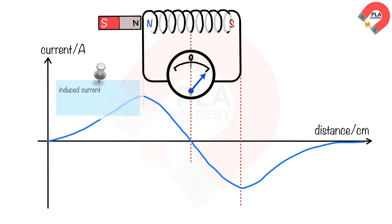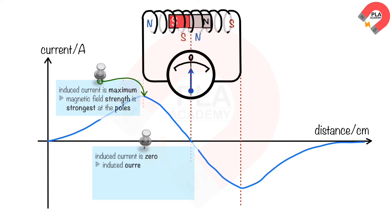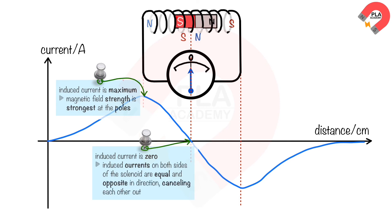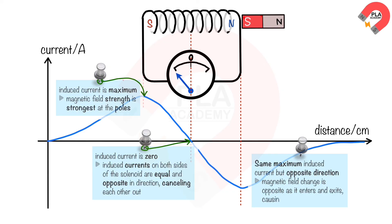The induced current is maximum when the magnet is entering the solenoid, because the magnetic field strength of the magnet is strongest at the poles. The induced current is zero when the magnet is at the middle of the solenoid, because the currents induced on both sides are equal and opposite in direction, cancelling each other out. The induced current then reverses and increases to the same maximum when the magnet exits, because the magnetic field change is opposite as it enters and exits, causing the current to reverse.